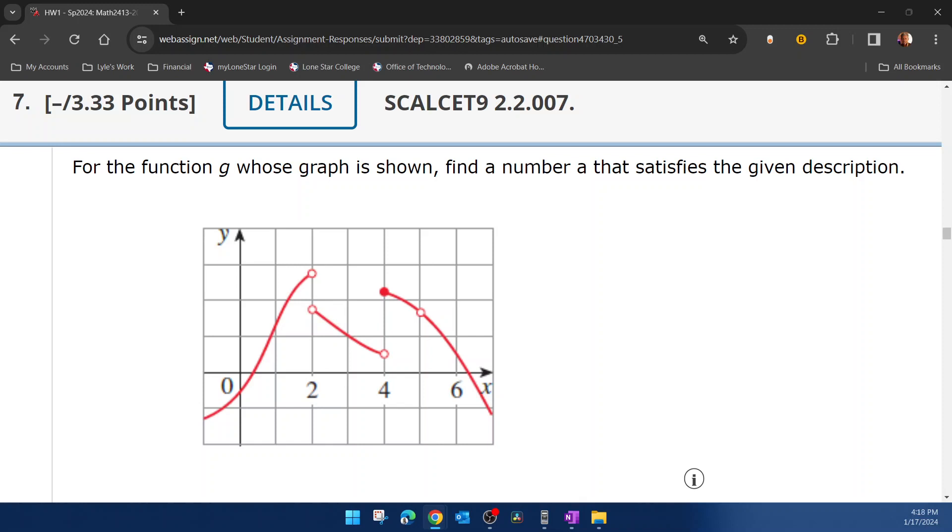All right, here we go. Question number seven from our calculus one homework number one in WebAssign. For the function g whose graph is shown, find a number a that satisfies the given description.